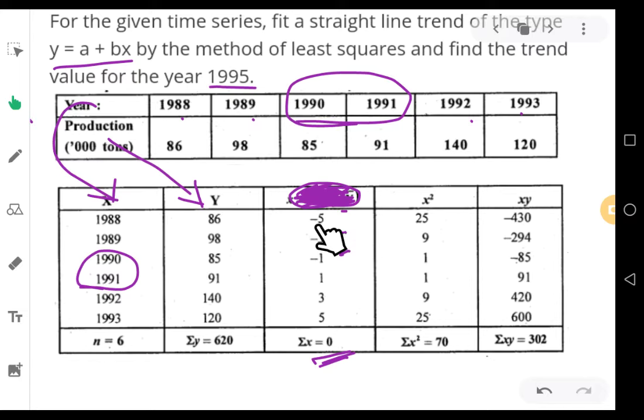Moving to the next column, that is x squared. You have to square this x. Minus 5 times minus 5 is 25. Minus 3 times minus 3 is 9. Then 1, 1, 9, and 5 times 5 is 25.